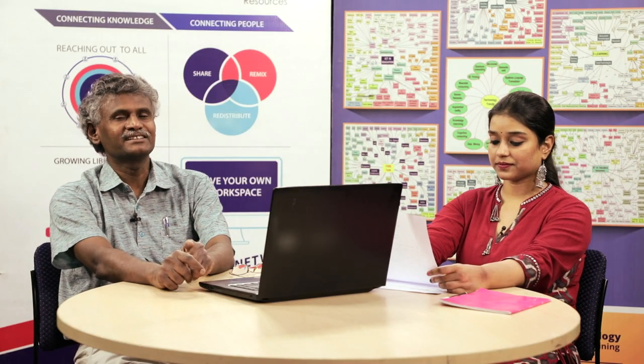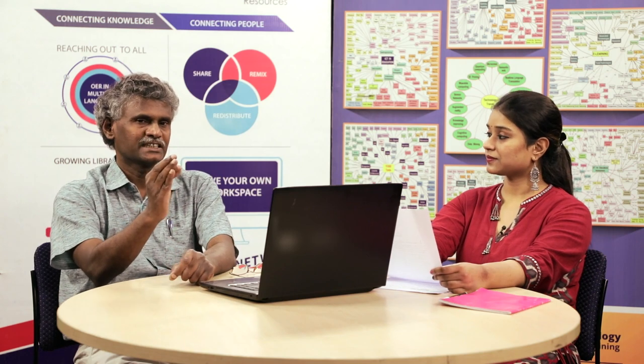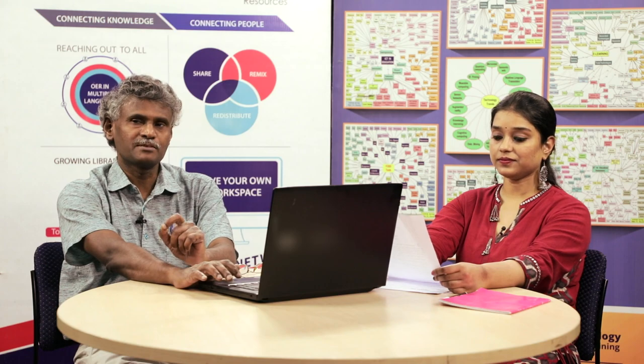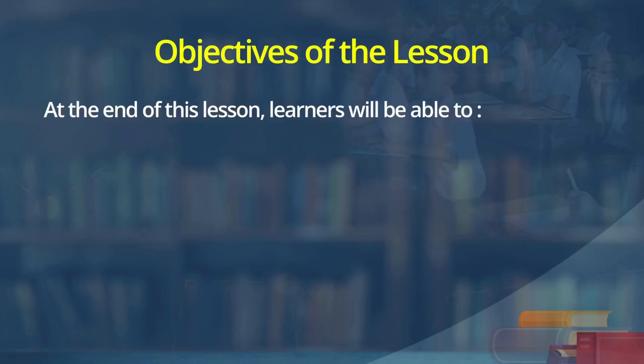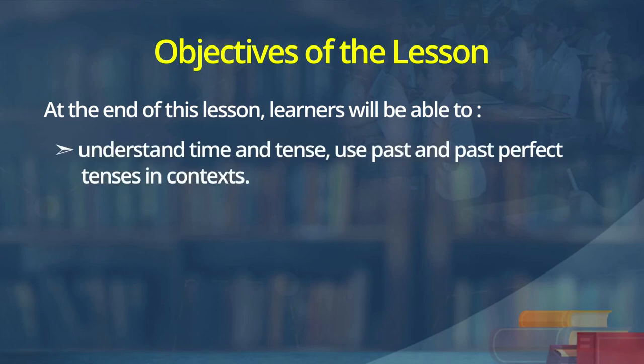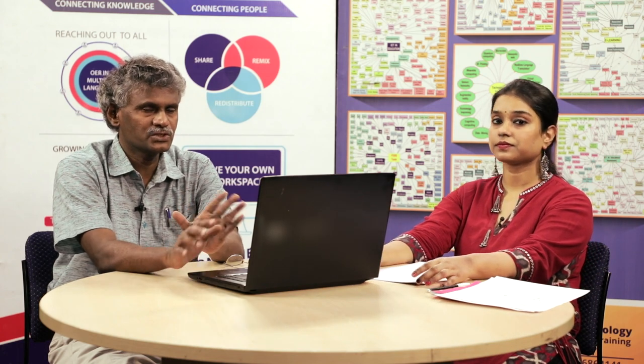So, Kriti and learners, we are going to learn past tense and past perfect — that is, 'I did it' and 'I had done it.' Before we move on, let us know the objectives of this lesson. At the end of this lesson, learners will be able to understand time and tense, use past and past perfect tenses in context, discover their forms, and use them in speech and writing appropriately.